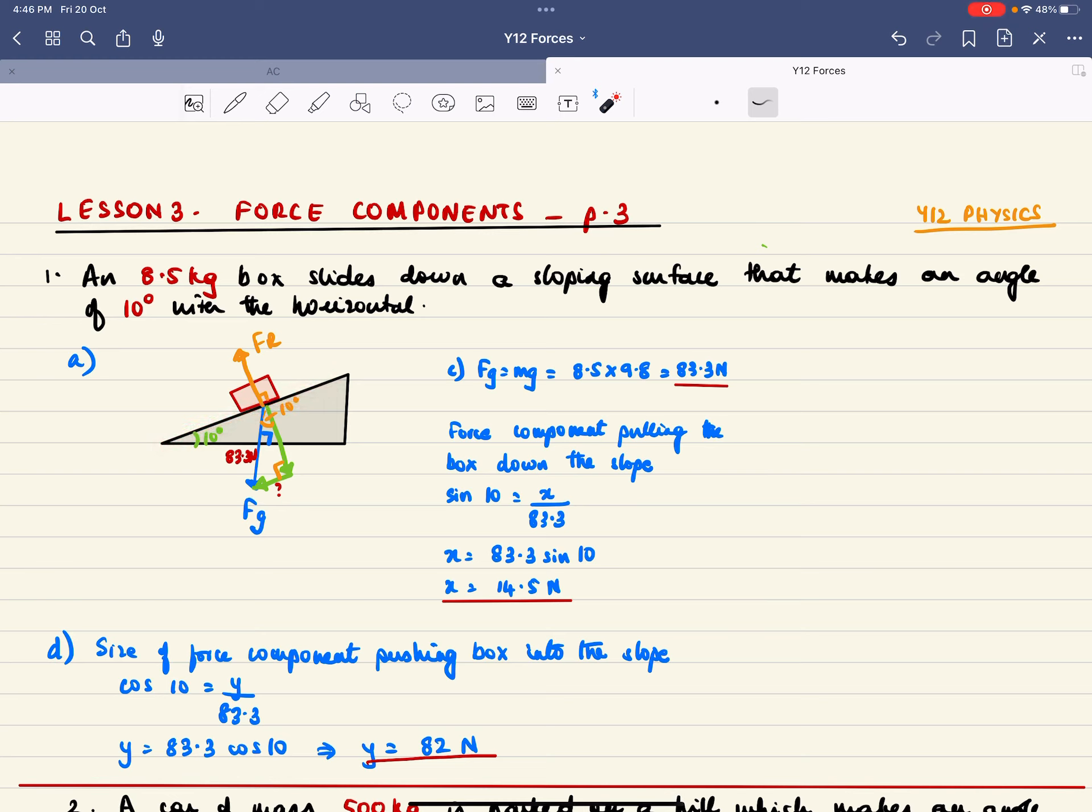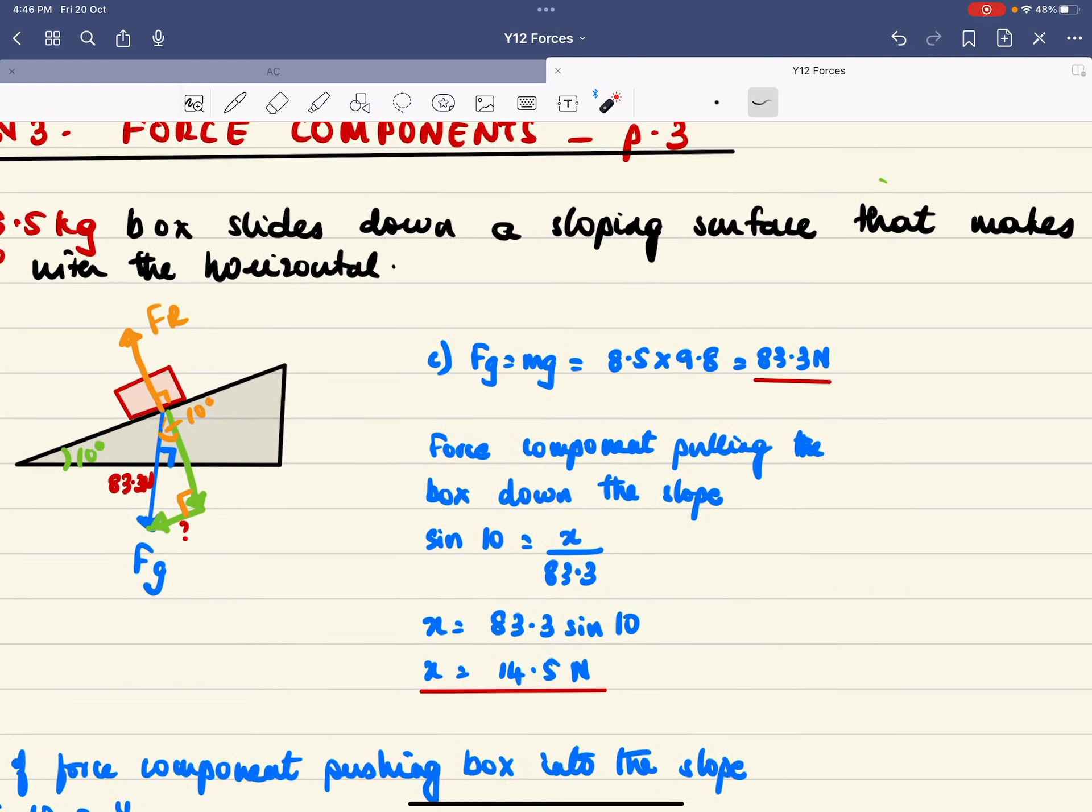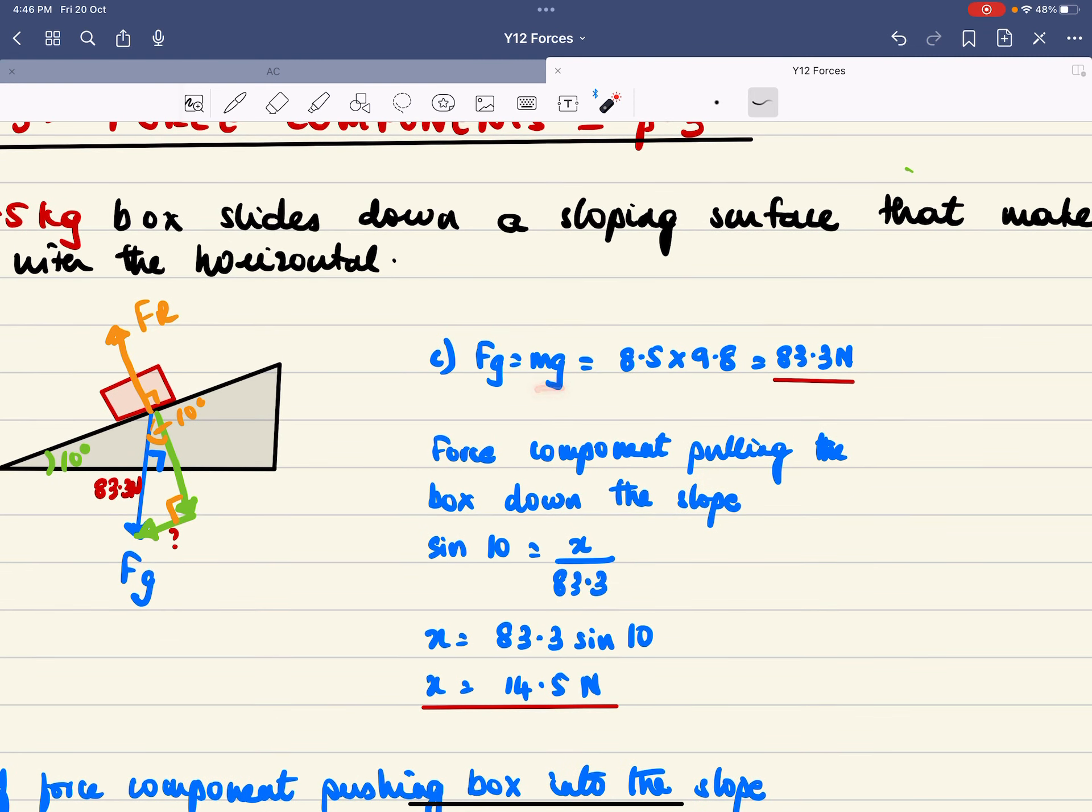And so the first thing I did was to find the weight force of the box. So the weight force or gravity force Fg is mg. So this is my M, that's my G and I get that is 83.3 Newtons.